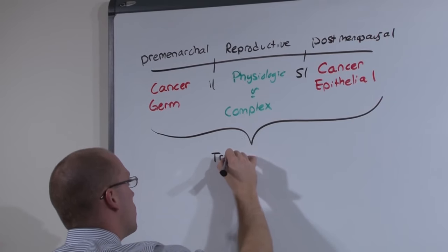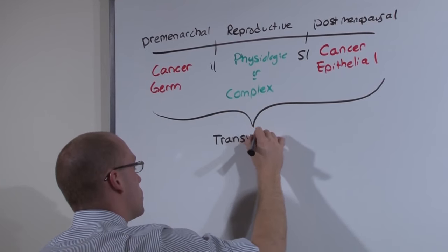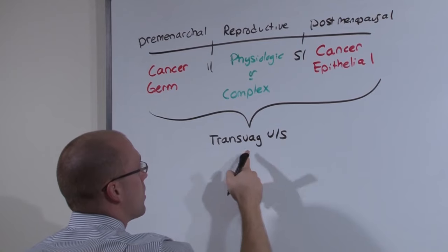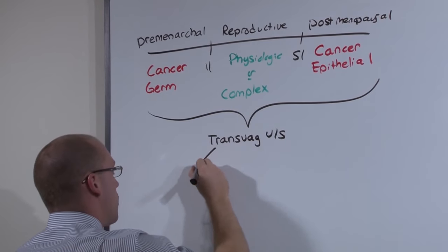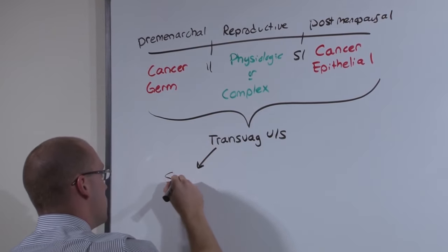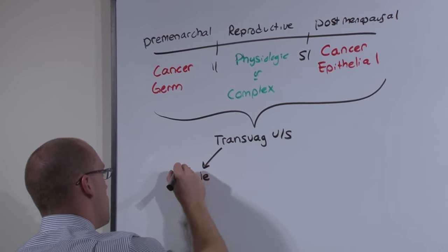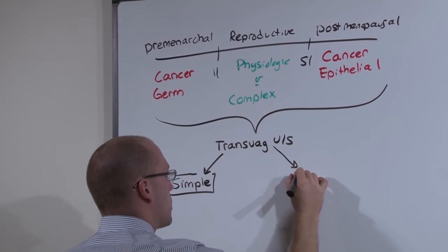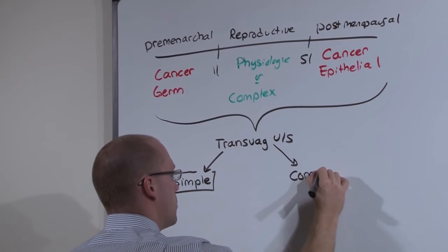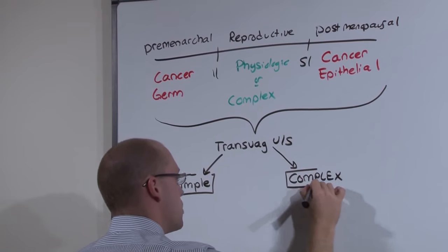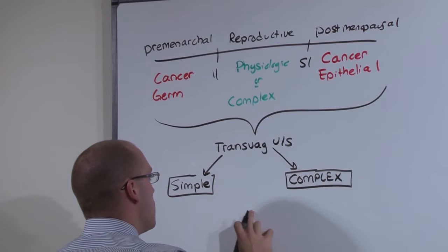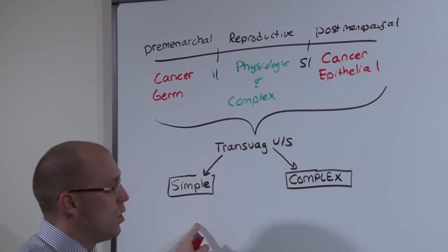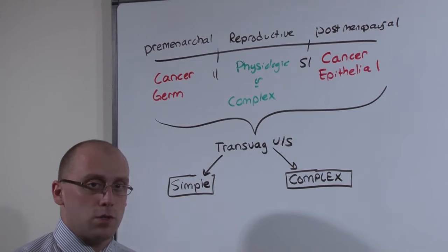You're going to get a transvaginal ultrasound to better qualify that mass. And you're going to see either a simple cyst, which is physiologic, or a complex cyst. Simple cysts are generally physiologic and will resolve with time on their own, whereas complex cysts is our differential.